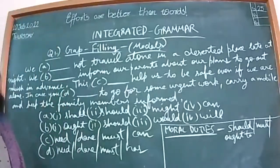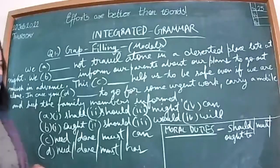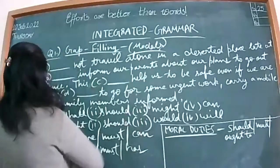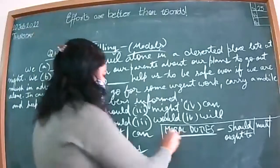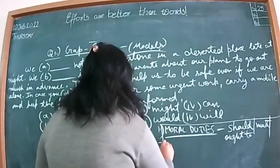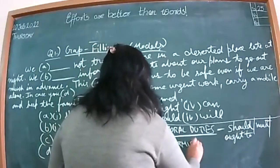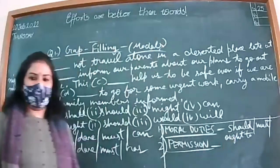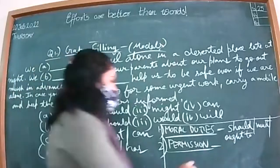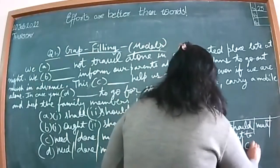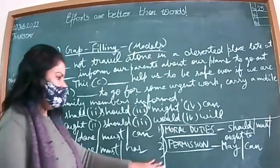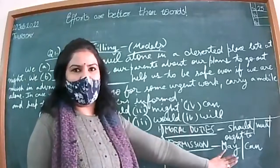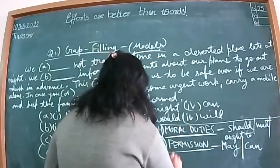We are revising modals today. The second category is permission. Whenever you are seeking permission or giving permission, you use may and can. For example: 'May I go out?' 'Can I go to drink water?' 'Yes, you can.' 'Yes, you may.' So whenever we seek or give permission, we use may and can.